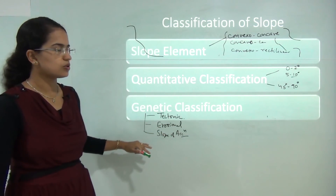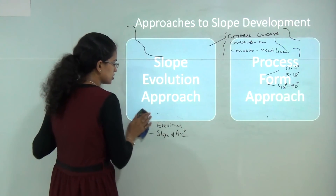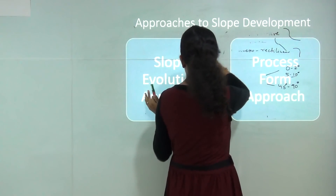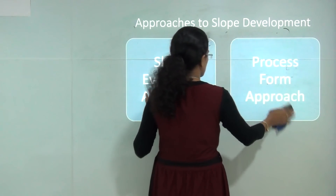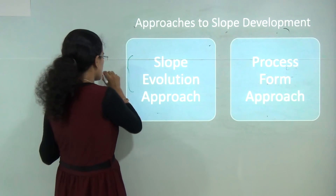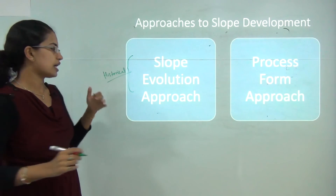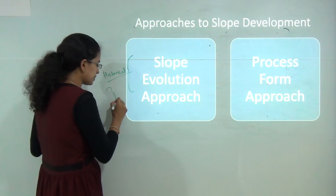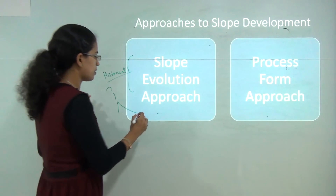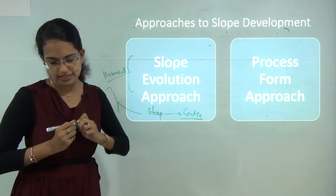The next topic is approaches to slope development. We can either talk about a process-form approach or a slope evolution approach. When we say slope evolution, we are talking about the historical perspective — how slopes evolved over time. For example, the slope was steeper, then it became gradual, and finally became a gentle slope. How the slope evolved from steep to gentle is classified under the slope evolution approach.